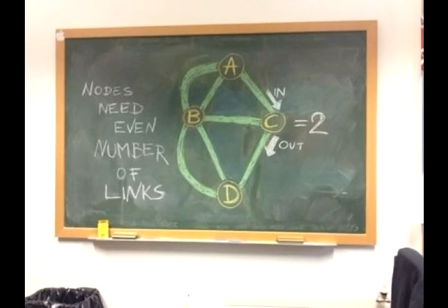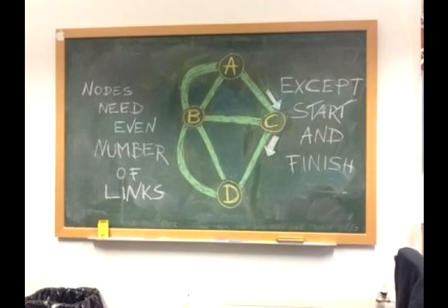So every time you enter a node on one bridge, you can leave it on another. But hang on. Your walk around the city could start and finish in different places. So those nodes could have an odd number of links. Right.